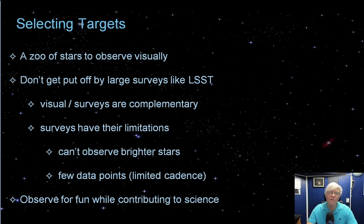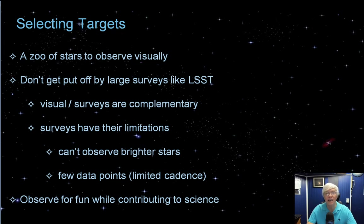There are nearly 1.5 million variable stars known, and there will be many more discoveries to come — literally a zoo of stars to choose from. You may have heard about large surveys such as the Large Synoptic Sky Survey, or LSST, which will observe and record the entire night sky every three nights. Every three nights — that's a lot of data.